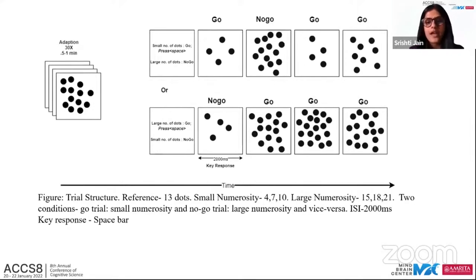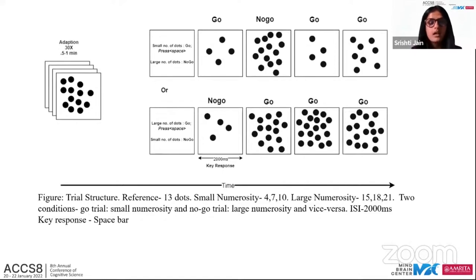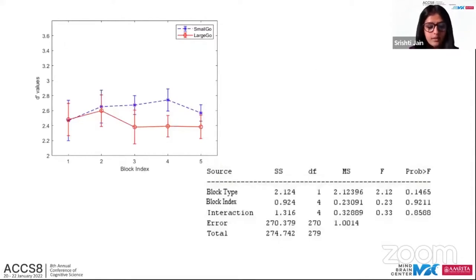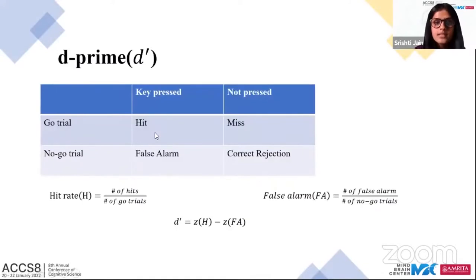In a small-go block of 40 trials, 28 were go trials and 12 were no-go. Because go trials are more frequent, participants were inclined to press the key; so when a greater numerosity was displayed, they had to suppress that pressing action. Lesser numerosities were 4, 7, and 11; greater numerosities were 15, 18, and 21. The ISI was 2000 ms. Data from 30 participants was collected; 1 was discarded for not performing correctly. We computed d-prime as a sensitivity index for both conditions separately.